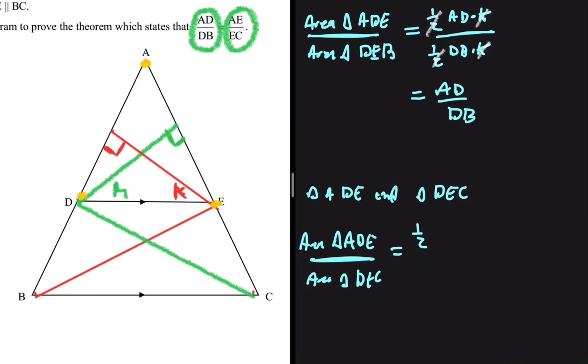The base of triangle ADE, in step number two, we used AD as our base and K as our height. In step number three, we're going to instead use AE as our base and H as our height.